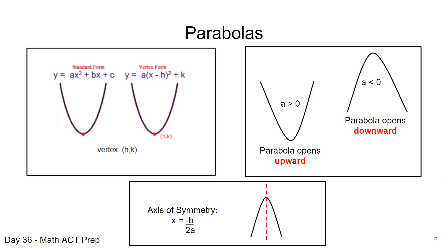We get the a and b values from our standard form: ax squared plus bx plus c. The coefficient on the x squared term is a, and the coefficient on the x term is b. Reading those right off the equation, we can get the axis of symmetry as the line x equals negative b over 2a.